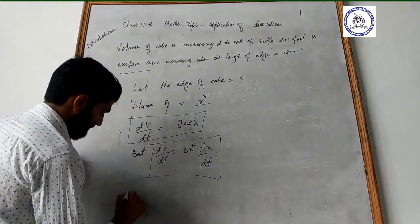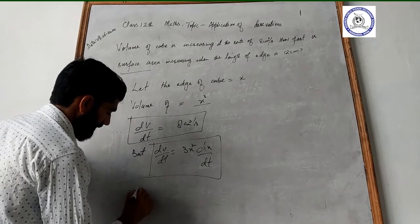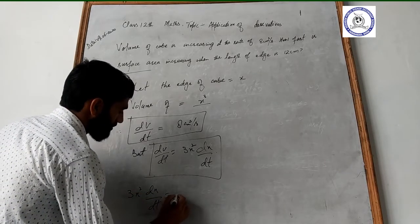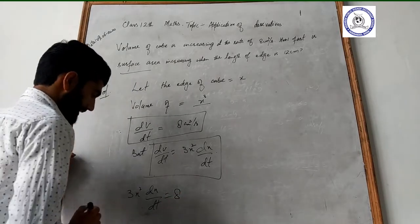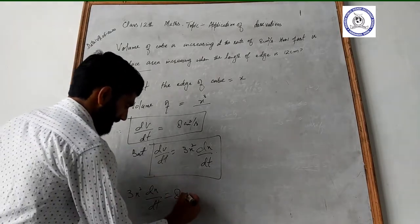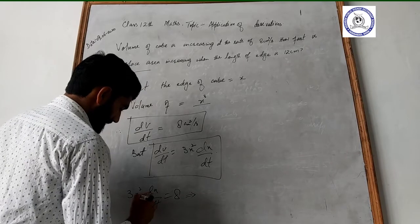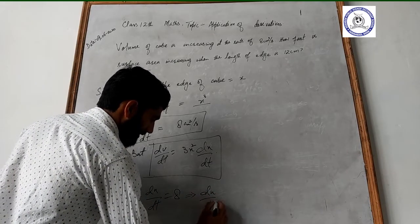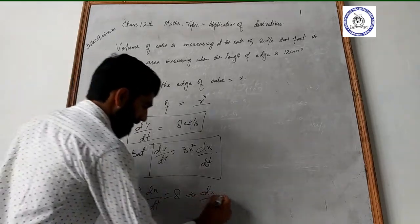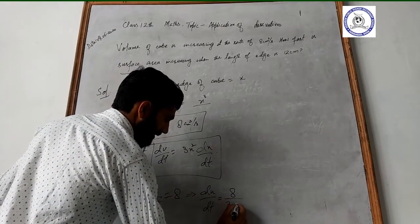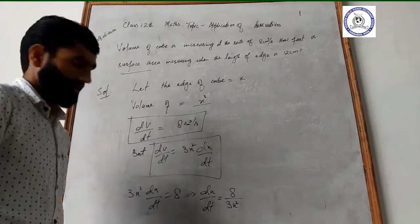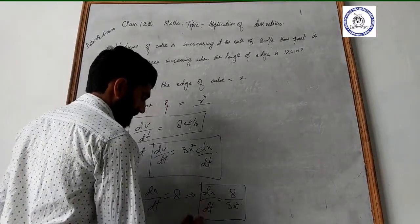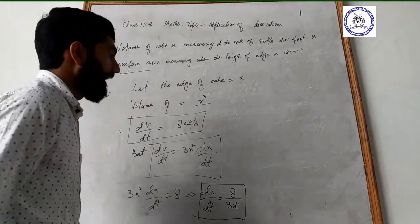We can write: 3x² · dx/dt = 8, which gives dx/dt = 8 / (3x²). Now we need to find the surface area rate of change. The formula for surface area of a cube is 6 times side squared, that is 6x².